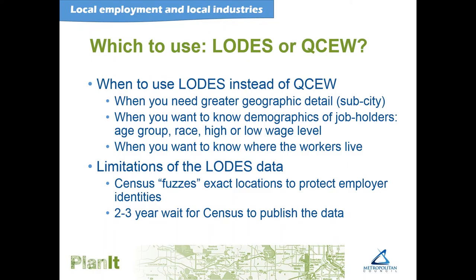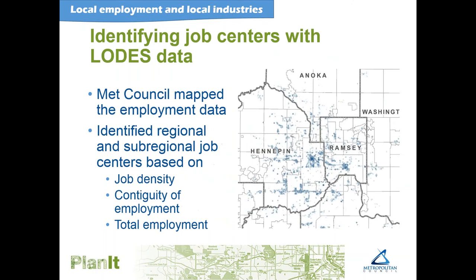The other limitation to be aware of is that the geographic detail could be inexact. The Census Bureau fuzzes the exact locations to protect employer identities — this involves moving specific employer points north, south, east, or west randomly into adjacent blocks. Not the exact employer location, but maybe close by, and it's hard to tell exactly where that's happening. We do think that the data is still very usable when you're rolling up data into higher level geographies like census tracts, zones, neighborhoods, or cities.